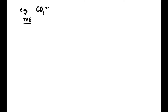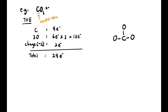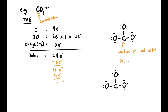For CO₃²⁻, we calculate TVE: carbon has 4 electrons, three oxygens give 6×3=18 electrons, and since the charge is negative 2 we add 2 extra electrons, giving a total of 24 electrons. Carbon is the central atom with three oxygens. We form three bonds (6 electrons used), leaving 18. We place all 18 electrons on oxygen — all used. But carbon is not octet yet, so we erase one lone pair and make a double bond. Now carbon is octet (1–8) and all oxygens are octet. We add a bracket and label the charge as 2−.